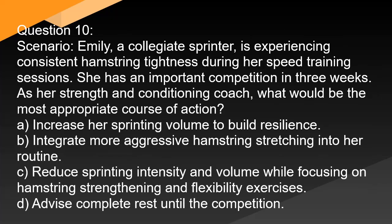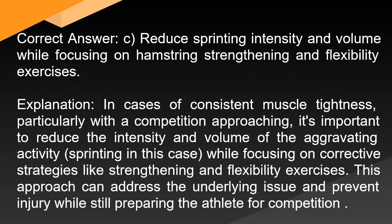Question 10 — Scenario: Emily, a collegiate sprinter, is experiencing consistent hamstring tightness during her speed training sessions. She has an important competition in three weeks. As her strength and conditioning coach, what would be the most appropriate course of action? A. Increase her sprinting volume to build resilience. B. Integrate more aggressive hamstring stretching. C. Reduce sprinting intensity and volume while focusing on hamstring strengthening and flexibility exercises. D. Advise complete rest until the competition. Correct answer: C. In cases of consistent muscle tightness with competition approaching, it is important to reduce the intensity and volume of the aggravating activity while focusing on corrective strategies like strengthening and flexibility exercises. This approach addresses the underlying issue and prevents injury while still preparing the athlete for competition.